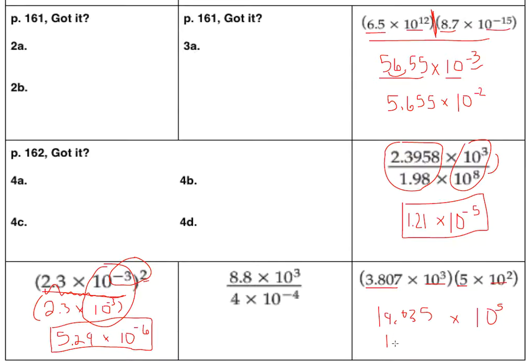19 is greater than 10. So I'm going to put the decimal here and make it 1.9035. And because I moved it back 1, I moved that decimal back 1, I'm going to have to add another exponent to my 5 to make that 10 to the sixth power.